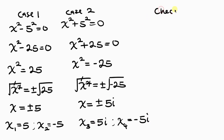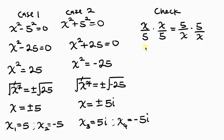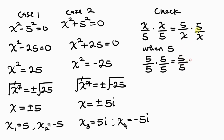Now let's check if what we have is correct. I'm going to check the real solution first. Our given equation is x over 5 times x over 5 equal to 5 over x times 5 over x. I'll check with positive 5: 5 divided by 5 times 5 divided by 5 equals 5 divided by 5 times 5 divided by 5. Notice that 5 divided by 5 is 1, so 1 times 1 equals 1 on both sides — the left-hand side equals the right-hand side. The same result holds for negative 5, since the negatives cancel when multiplied.